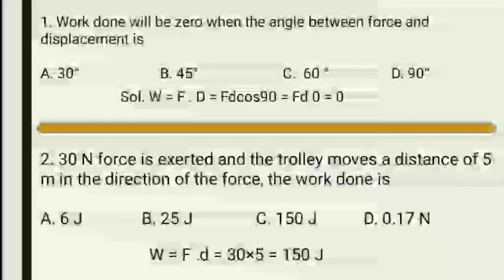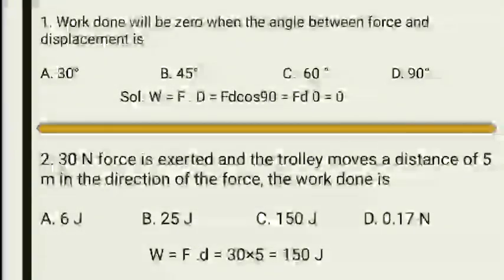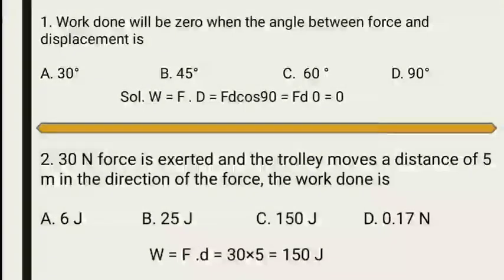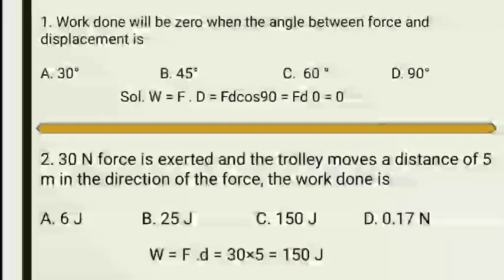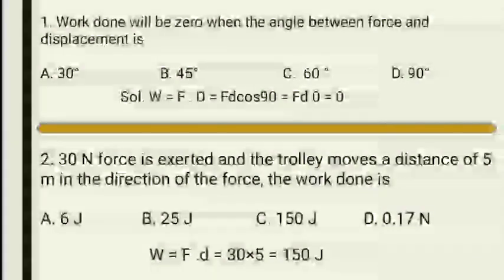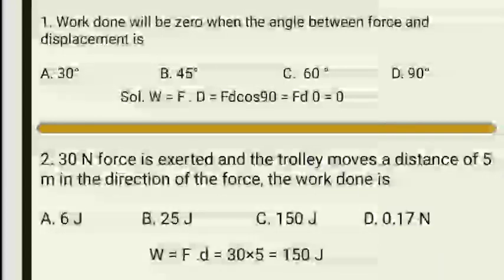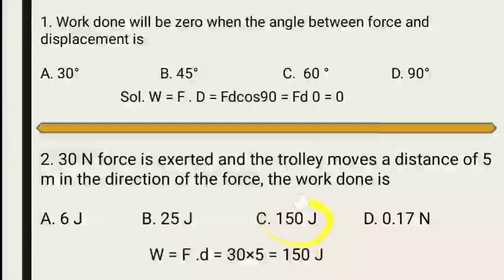The options are: Option A is 6 joules, Option B is 25 joules, Option C is 150 joules, and Option D is 0.17 newton. Therefore Option C is the correct option.